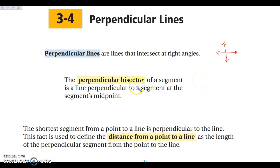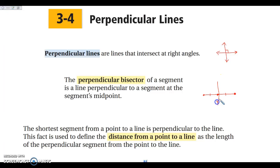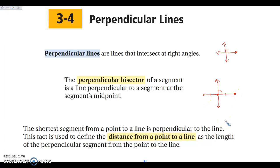A perpendicular bisector of a segment — if I have a segment and I have the midpoint, remember your midpoint is a bisector of the segment. If I draw a perpendicular line through that midpoint, this line is the perpendicular bisector of this segment. So the perpendicular bisector will cut the segment in half, creating two congruent pieces, and it will be perpendicular to that segment.